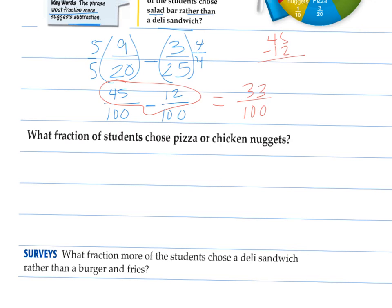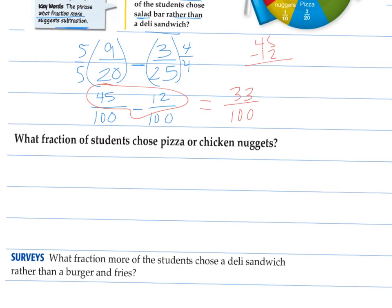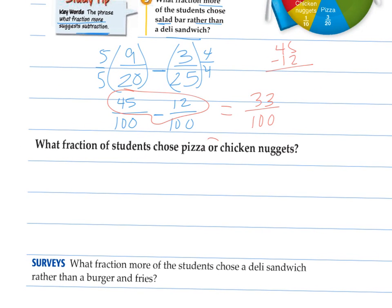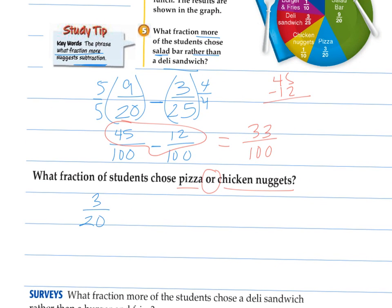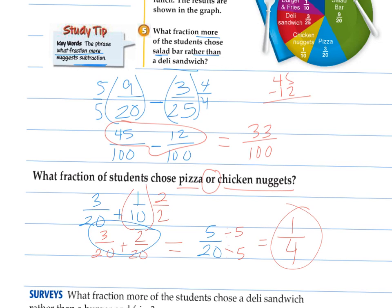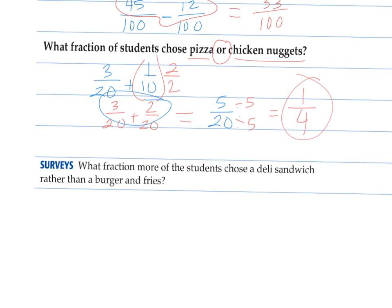What fraction of students chose pizza or chicken nuggets? Pizza or chicken nuggets, this would mean that we're going to be adding those together, because we're wondering how many total pizza or chicken nuggets. So for pizza, it was three twentieths plus one tenth. Least common multiple of ten and twenty is twenty. So we just change that one by two. So I have three twentieths plus two twentieths. So the fractions of students that chose them were five out of twenty, which simplifies, they share a factor of five, to one out of every four students. Remember, it's a ratio, you can read it like that.